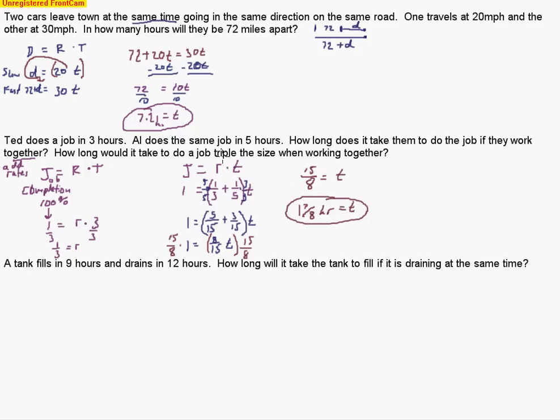Now we want to triple the size. Triple means three times. Instead of a job equaling one, because typically this is always the constant, always one, now we're tripling that job. So that means we're going to end up multiplying it by three. Job equals one times three equals three. So now we're going to do three equals this eight fifteenths, which we know is the rate at which they do the job together, times t.